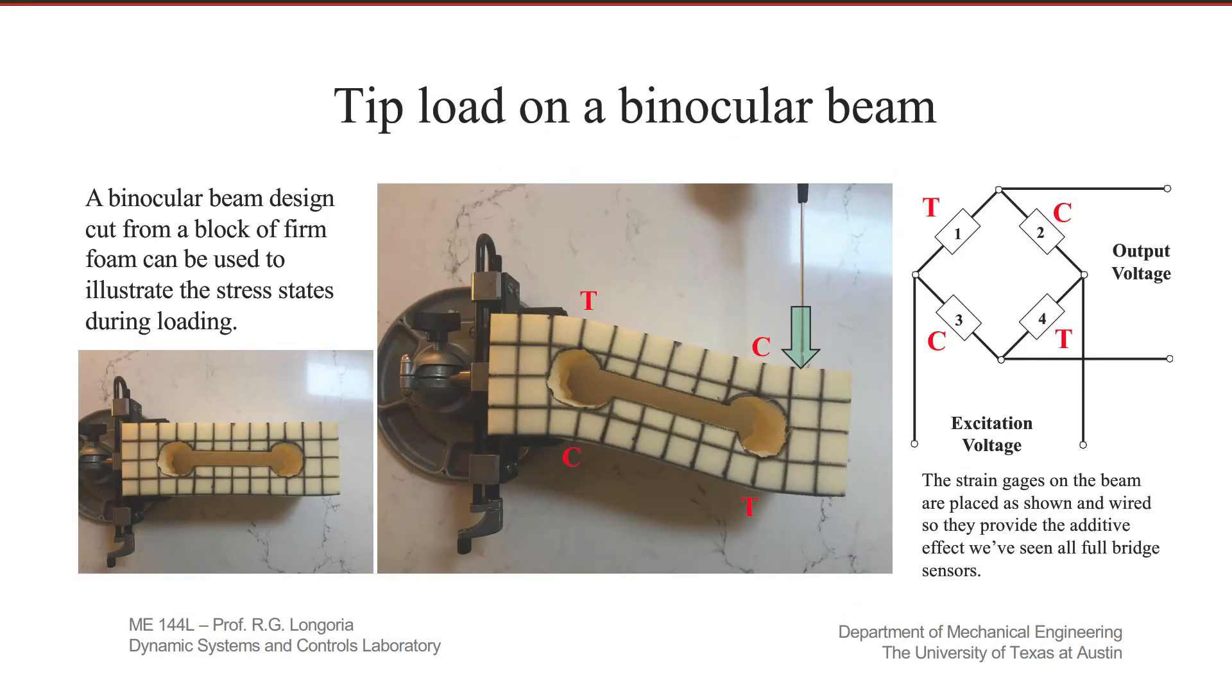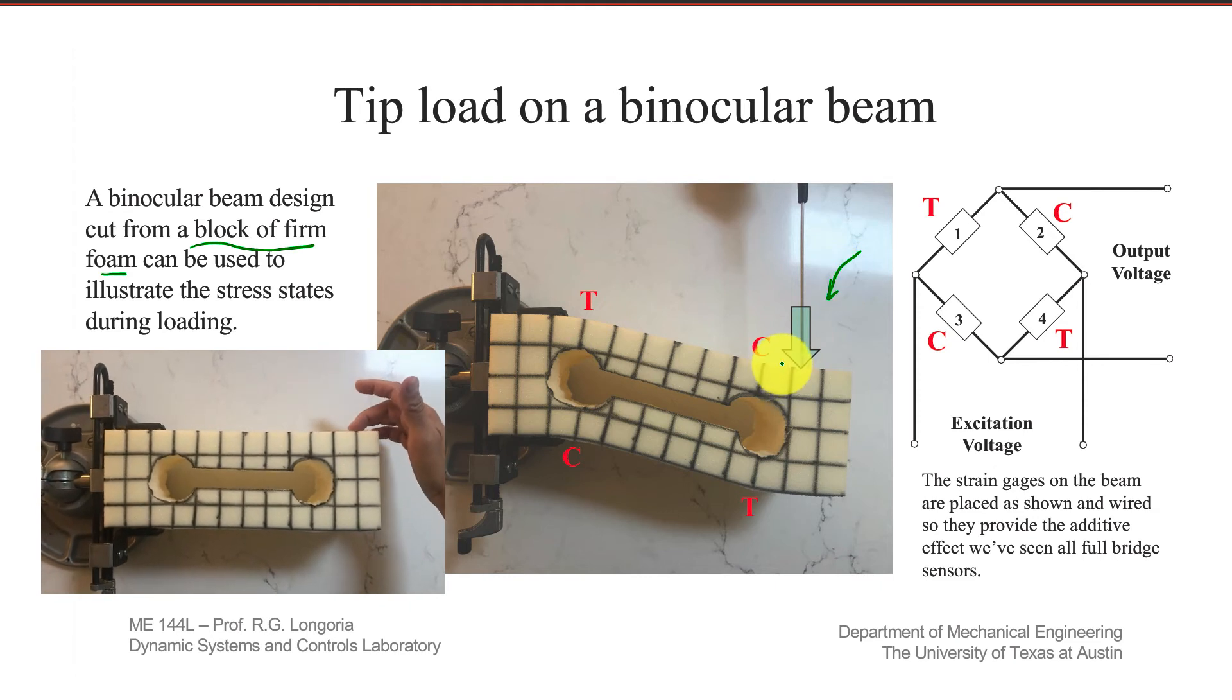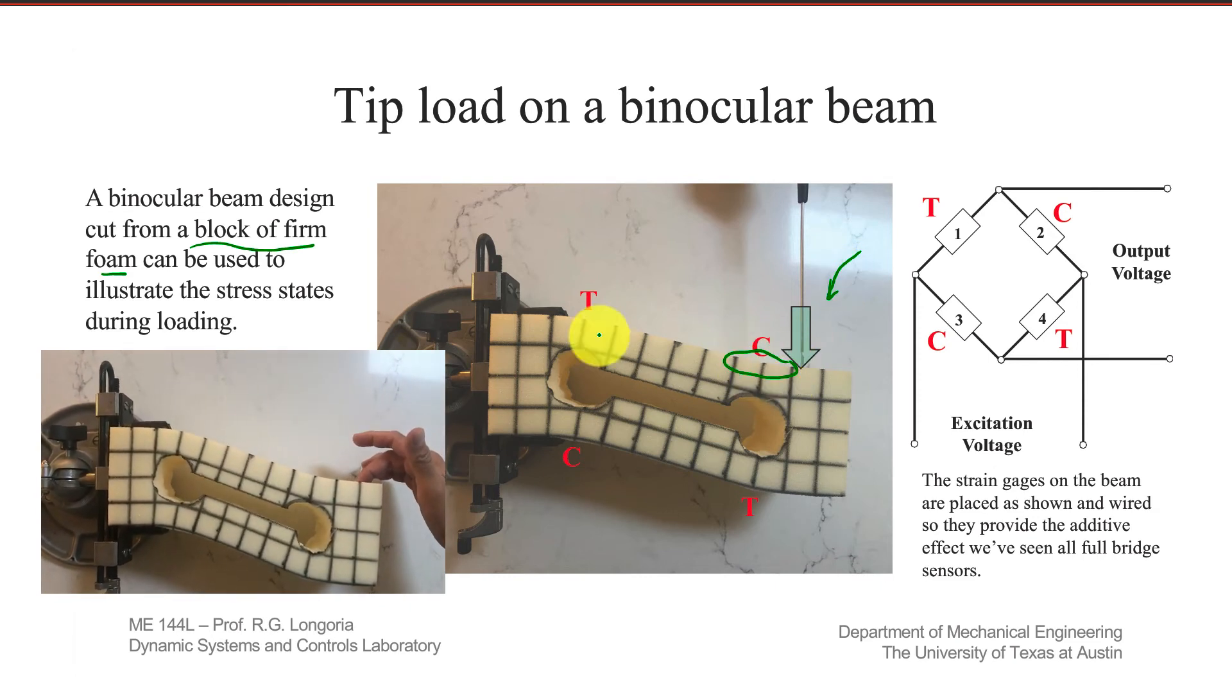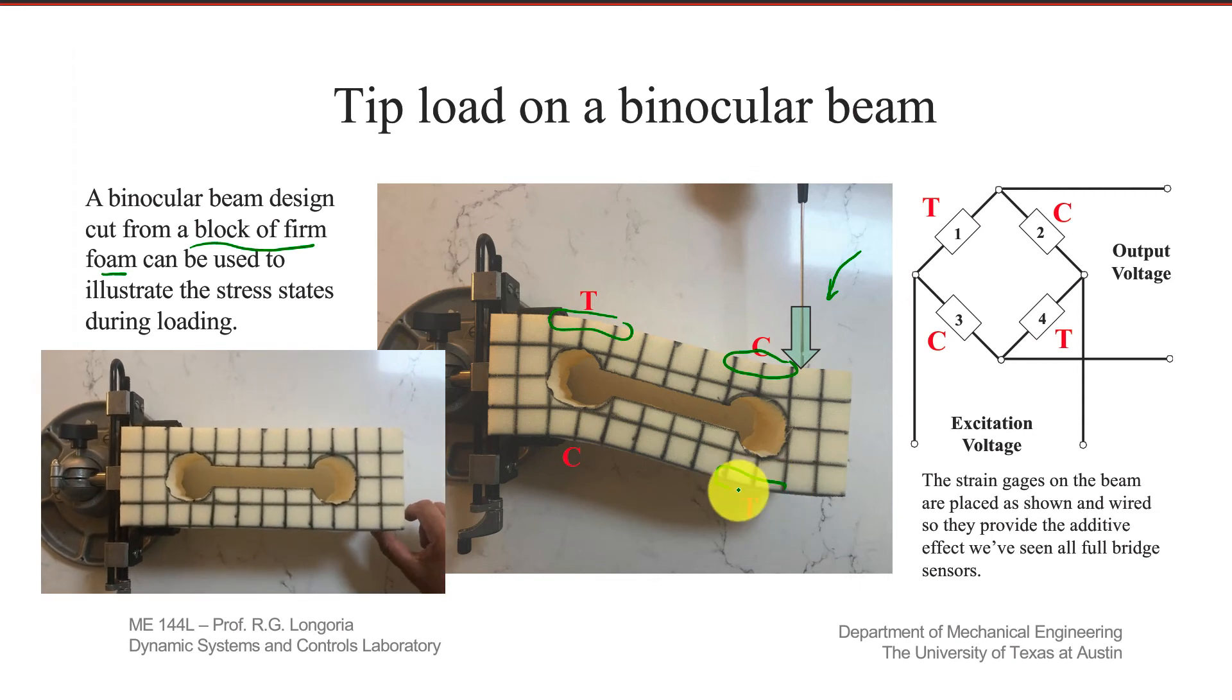Turns out that that's what these binoculars are for, and I'm going to show you that through this little demo. And so I did it, I took a piece of foam, and I cut out from a block of some firm foam this binocular design here. Cut all the way through. This is a four by four inch piece of foam. And as you can see, when you apply a tip load, you see how this section, you can see the lines. This is in tension, this is in compression, and down here, it's in tension and compression.